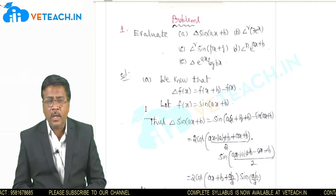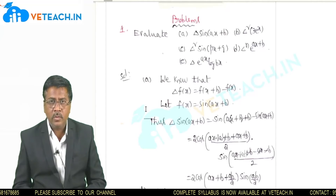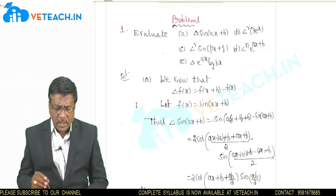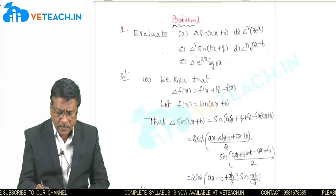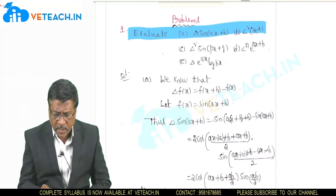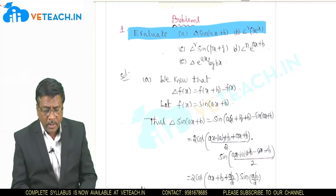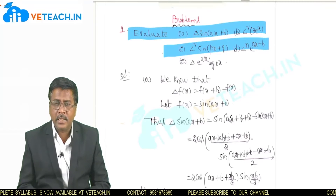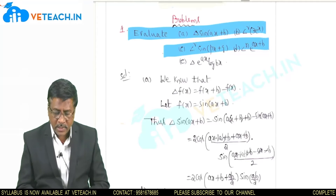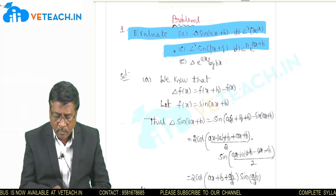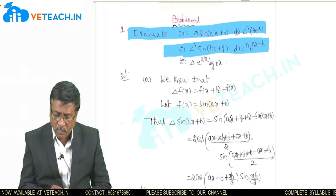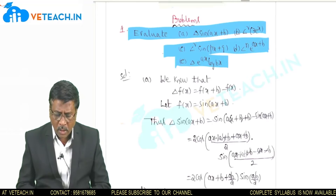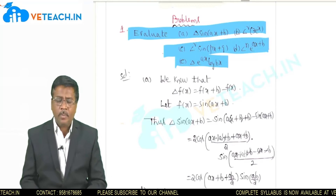Now, what problems are to be given and how we are able to solve them from the university examination point of view. The problems to evaluate are: (1) delta of sin(ax+b), (2) delta squared of 3·eˣ, (3) delta squared of sin(bx+q), (4) delta to the power n of e^(ax+b), and (5) delta of e^(ax) · log(bx).